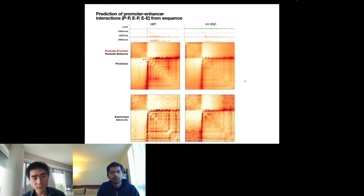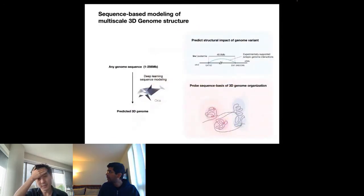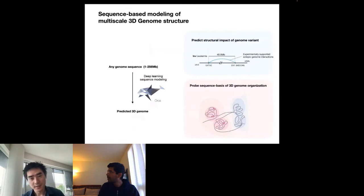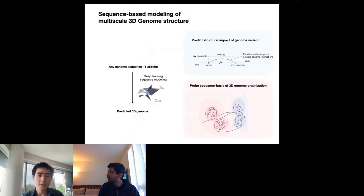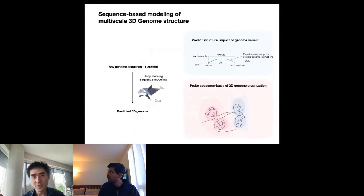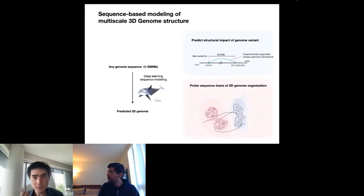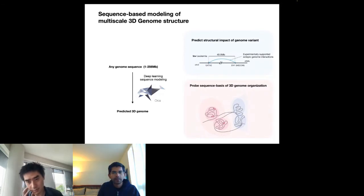Having shown that we can predict different types of interactions from sequence, the key use of these sequence-based models is making predictions for new sequences that have never been measured experimentally. Given any genomic sequence in principle, we can now predict its 3D genome structure. This enables many applications, two of which we explored in this manuscript.